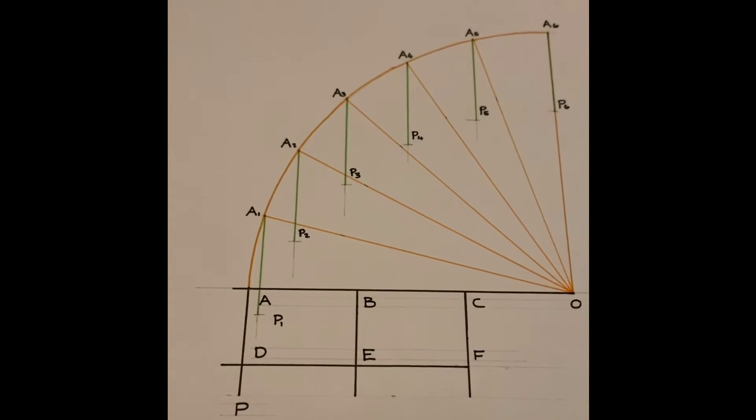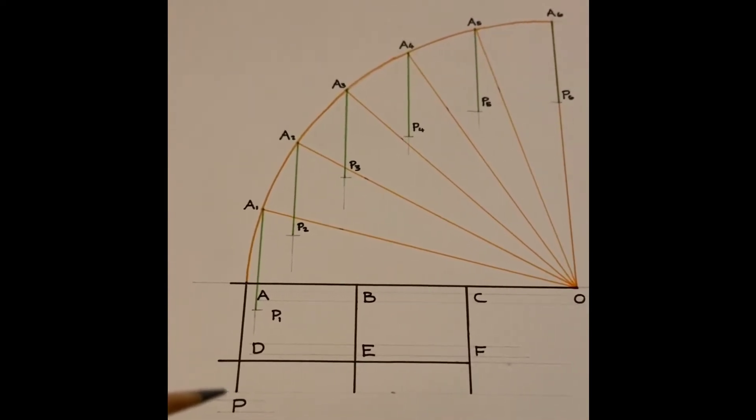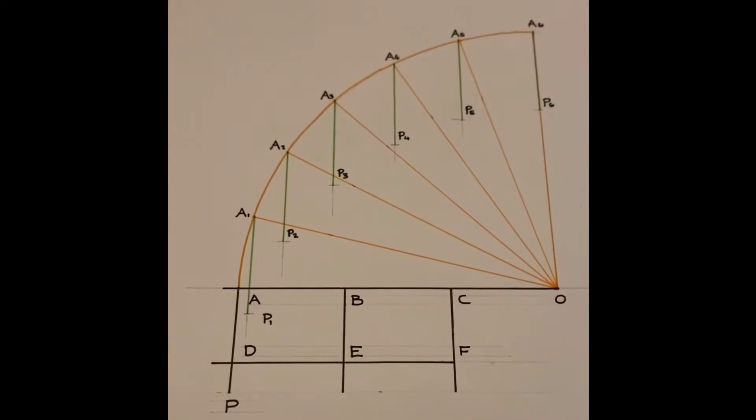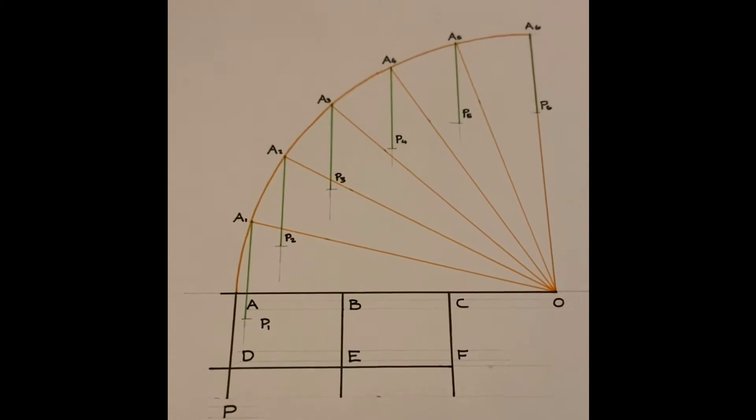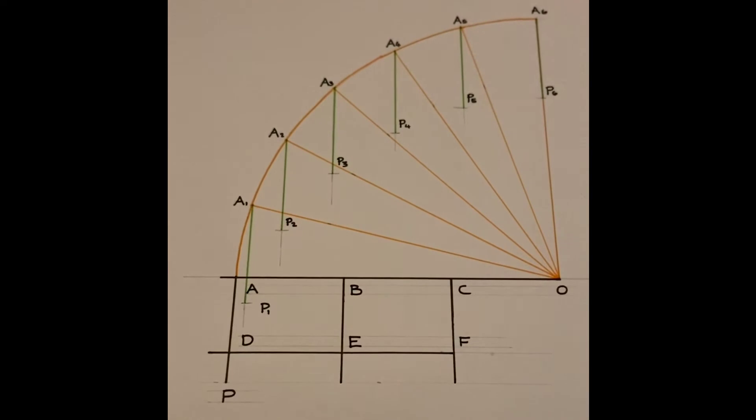So once we have all the points found we connect now a line from P to P1 through the rest of the P points and this is the locus of point P for the movement of the barrier from a horizontal position into a vertical position.